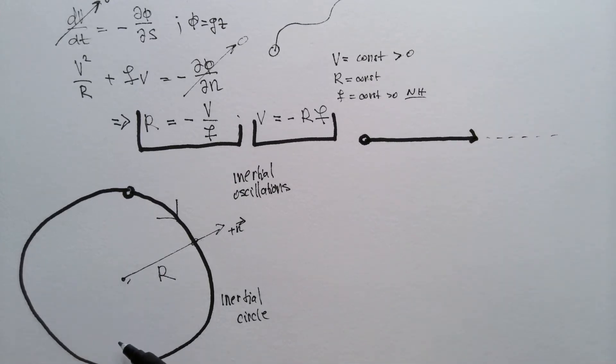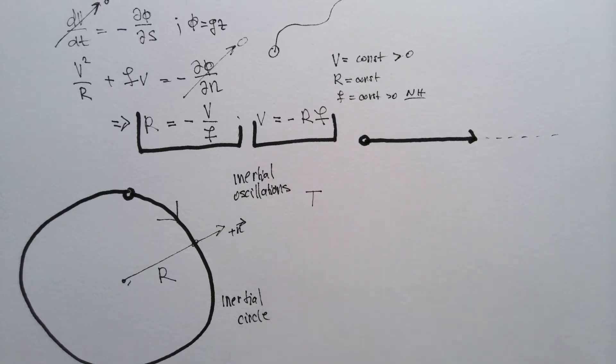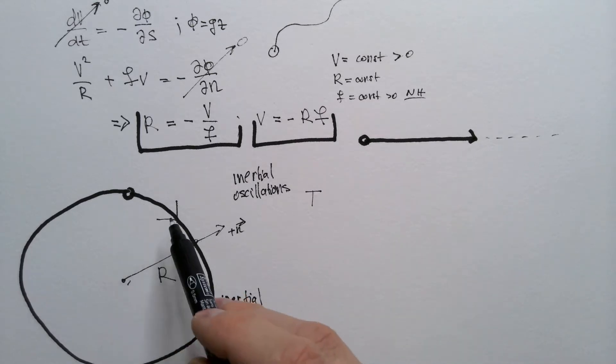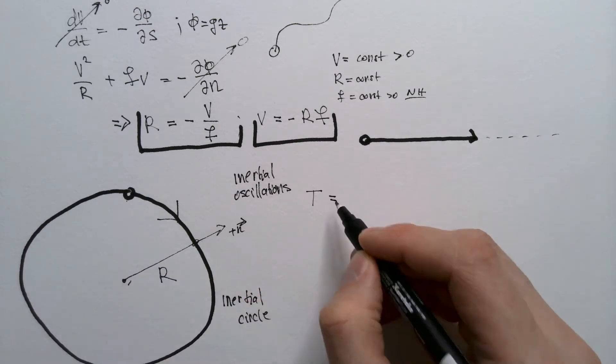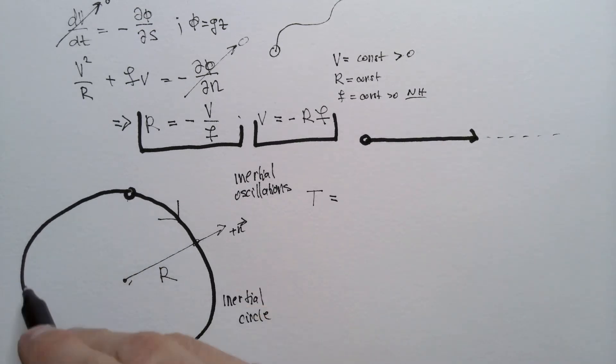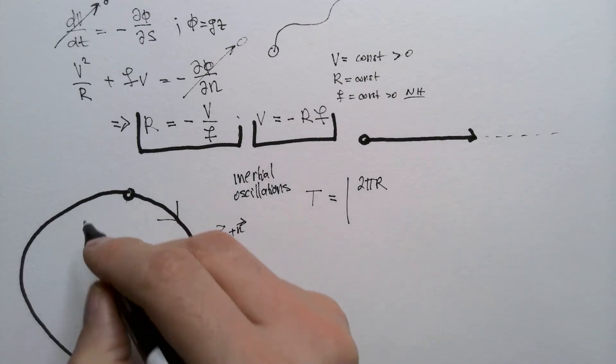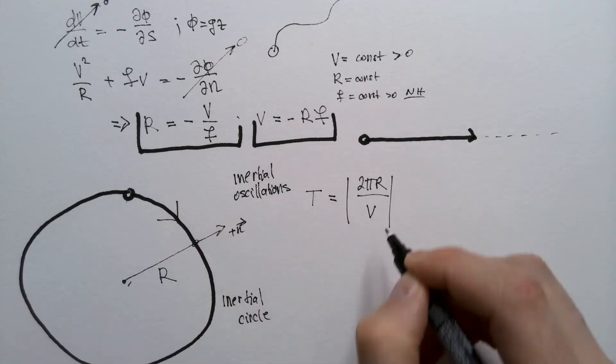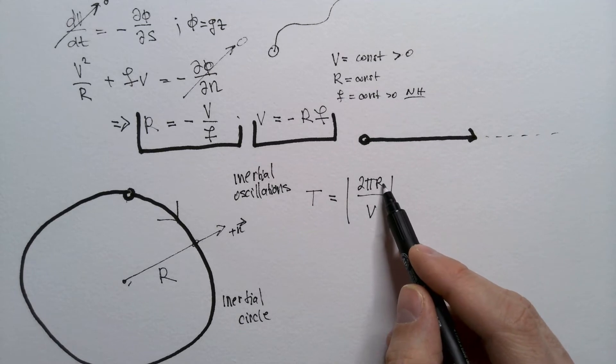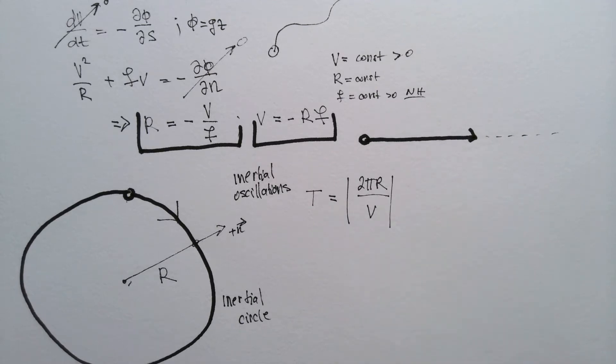Now, from this figure, you can already see that we can easily calculate period of these oscillations, and let's call it T. What is period? Period is time that this parcel of air needs to complete one revolution. So, that would be circumference of this circle divided by velocity of that parcel of air. So, that would be, in absolute values, 2 pi r, that's the circumference of this circle, over v. And I put absolute because r can be negative, like in this case over here, or it can be positive, so to cover both cases.